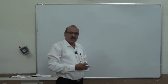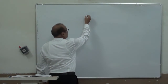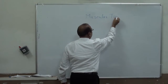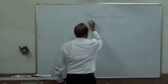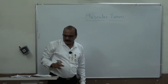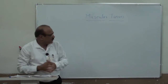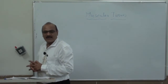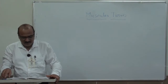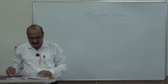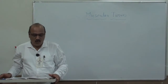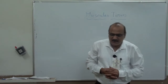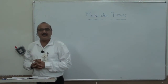Today we are going to study Muscular Tissues. Muscular tissues are tissues derived from the mesoderm and consist of special cells which have the ability to contract and expand. They are the type of cell responsible for contraction and relaxation.